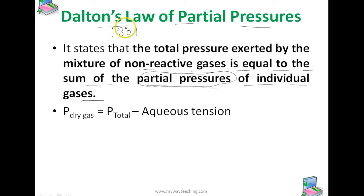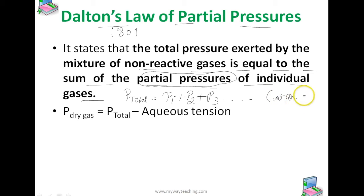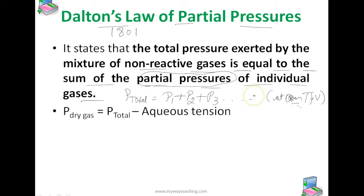According to this law, P total equals P1 plus P2 plus P3, where P1, P2, P3 are the individual partial pressures, at constant temperature T and volume V. Gases are generally collected over water and therefore are moist. The pressure of a dry gas can be calculated by subtracting the vapor pressure of water from the total pressure of the moist gas.